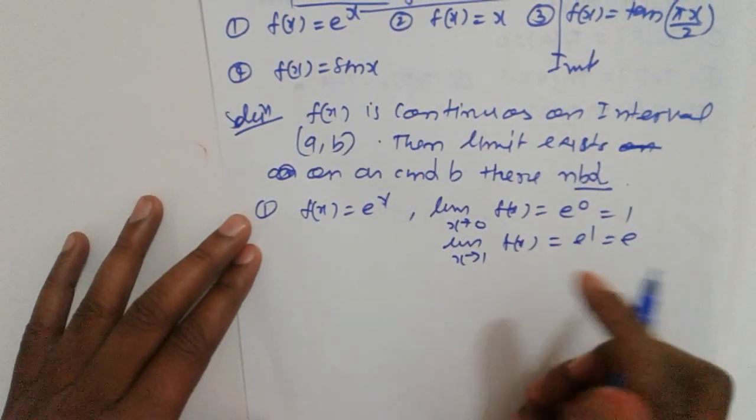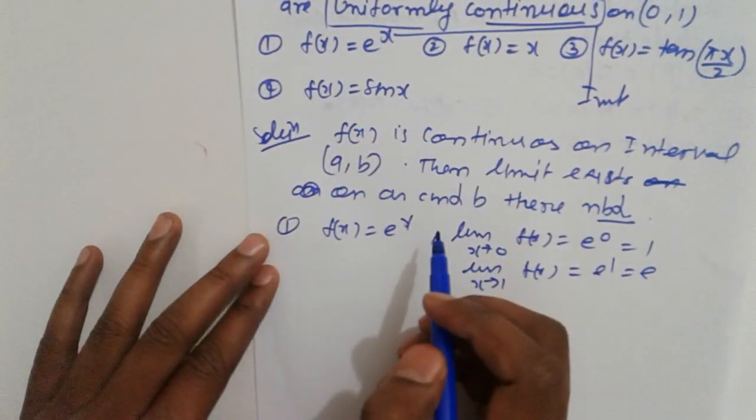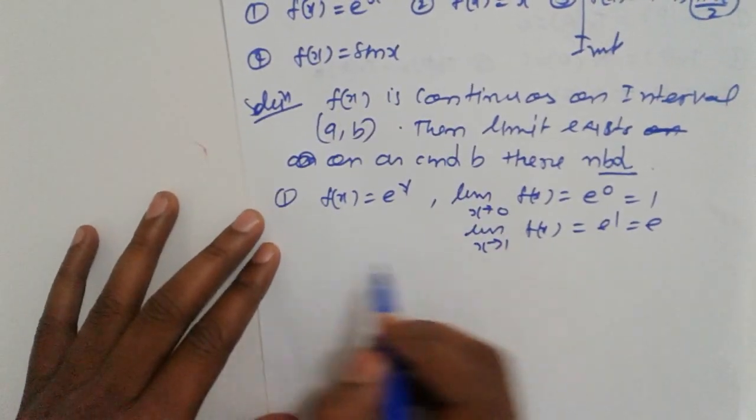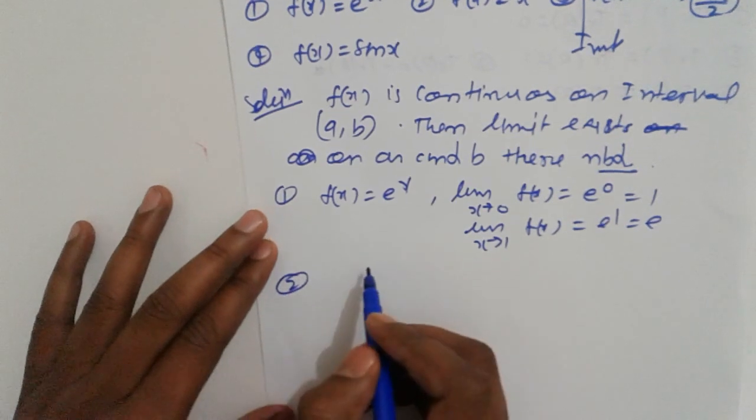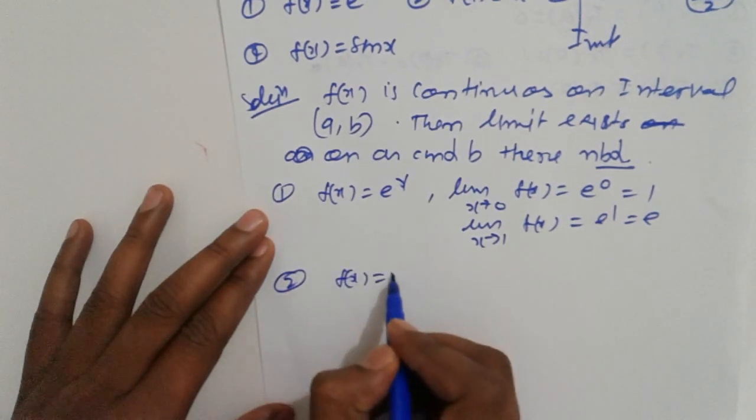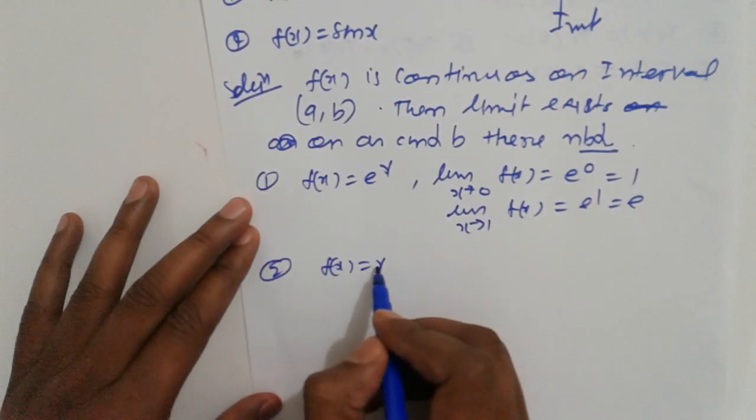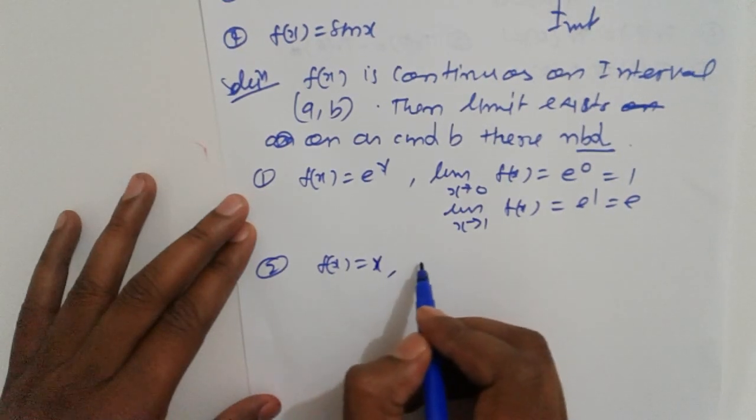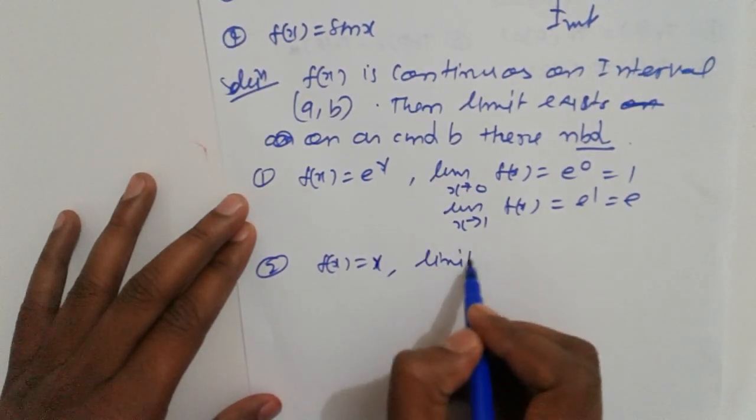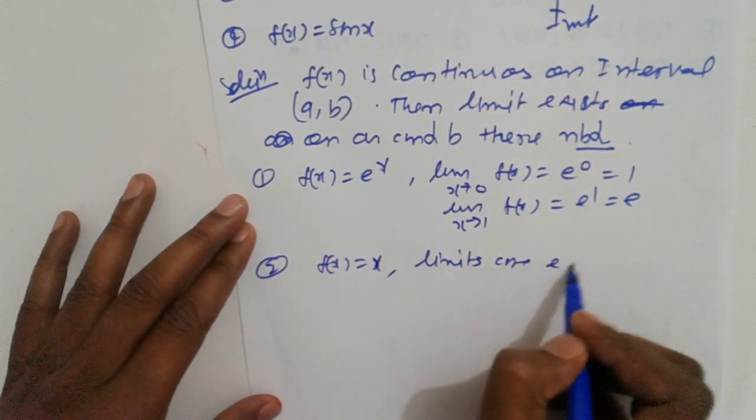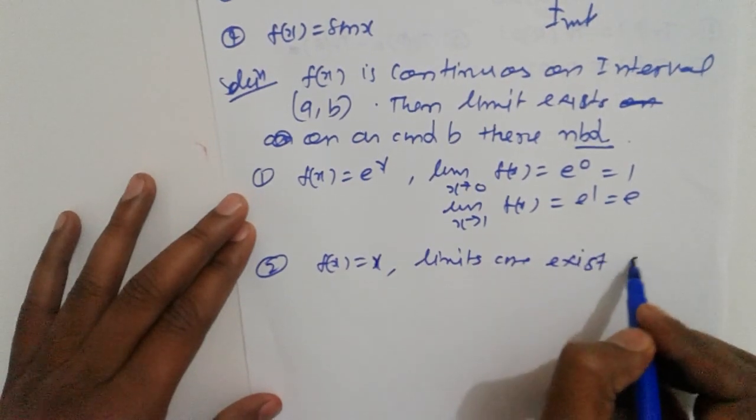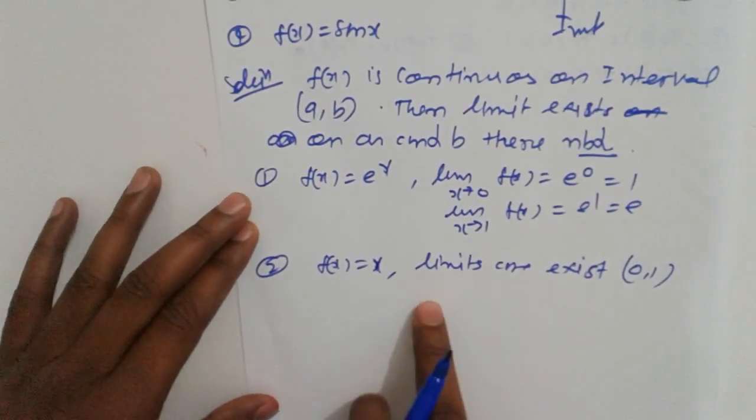So the first option is correct. Next, option 2: f(x) = x. Obviously the limits exist at 0 and 1.